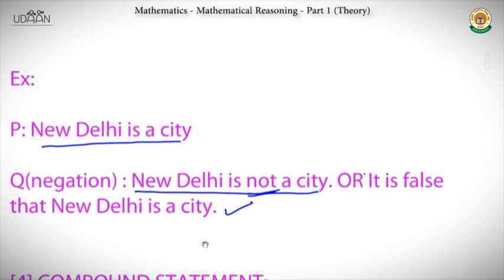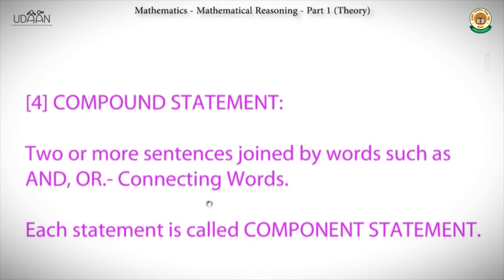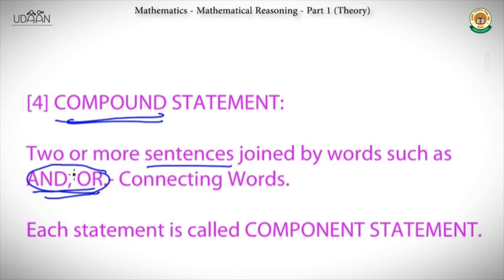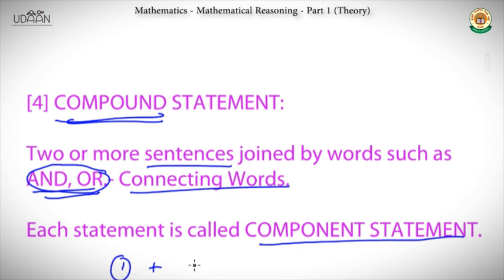Compound statements are two or more statements joined by words such as 'and' or 'or.' It is the combination of two or more sentences. The words used to join them are called connecting words. Each individual statement within a compound statement is called a component statement.